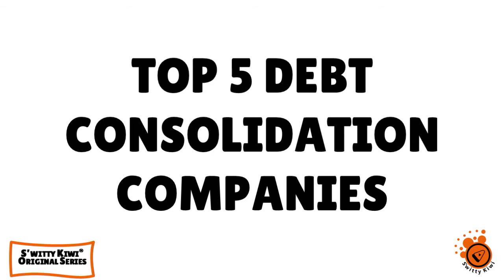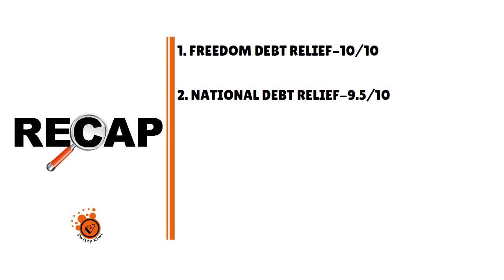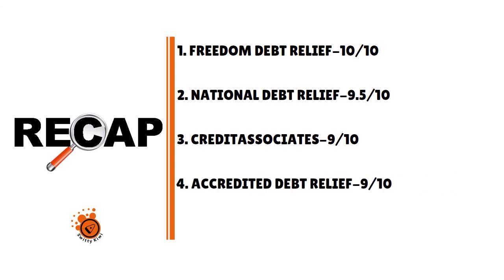Welcome back, folks, to the final section of today's conversation. I want to quickly wrap up. The top five debt consolidation companies: Number one, we have Freedom Debt Relief, 10 over 10. Number two, we have National Debt Relief, 9.5 over 10. Number three, we have Credit Associates, 9 over 10. Number four, we have Accredited Debt Relief, 9 over 10. And number five, last but not least, we have J.D. Wentworth Debt Relief, 8.5 over 10.